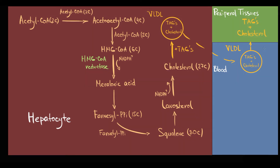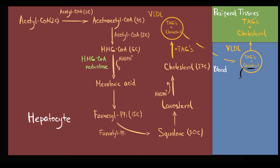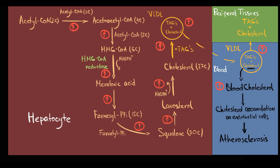Cholesterol is like school notes — at a certain point they are very helpful, but after we finish school, they become total garbage. Similarly, cholesterol cannot be degraded to CO₂ and water, and the organism cannot produce ATP from cholesterol. So cholesterol must be used for a certain purpose, otherwise it becomes a problem. Cholesterol can accumulate on endothelial cells in blood vessels, and progressive accumulation will cause atherosclerosis. The higher the cholesterol synthesis or absorption, the more cholesterol molecules will be present in the bloodstream, and the more rapidly atherosclerosis develops.